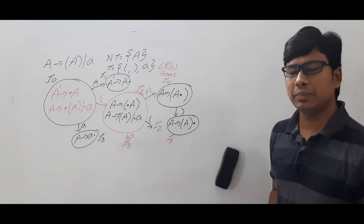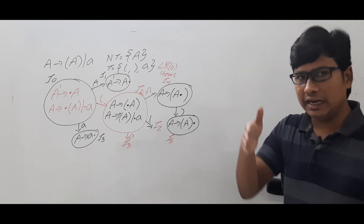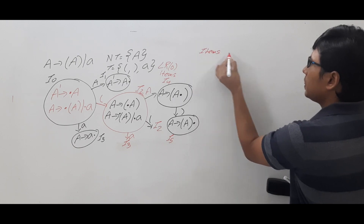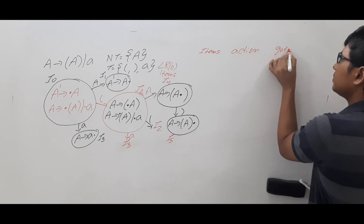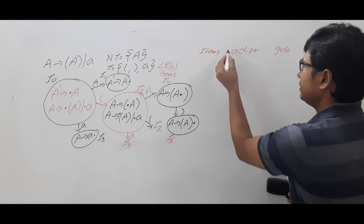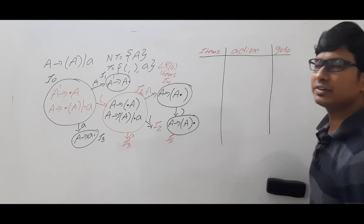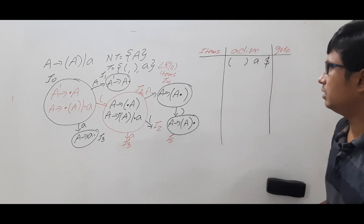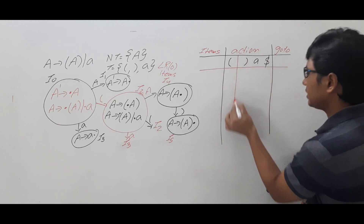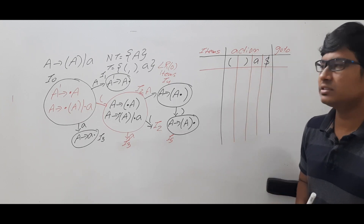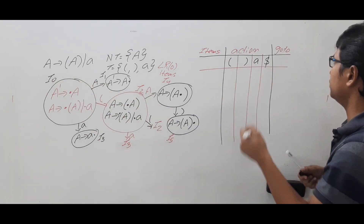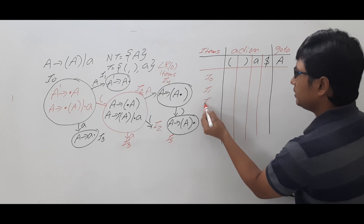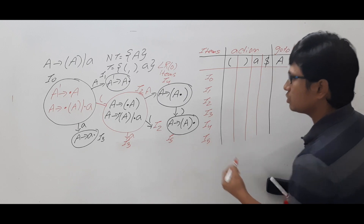Once we have the LR(0) items, the next step is to construct the SLR(1) parsing table. The table has an Action part and a Go-To part. The Action part consists of terminals: open braces, closed braces, small 'a', and dollar. The Go-To part consists of non-terminals — we have only one, capital A. The items are I0 through I5, for a total of six items.